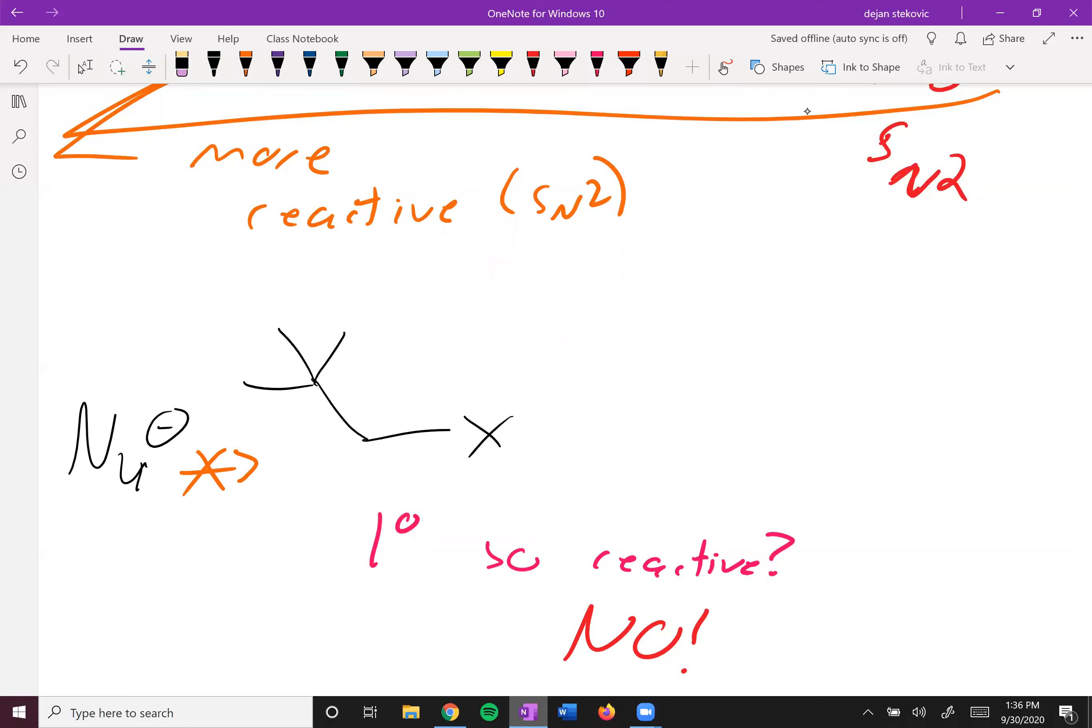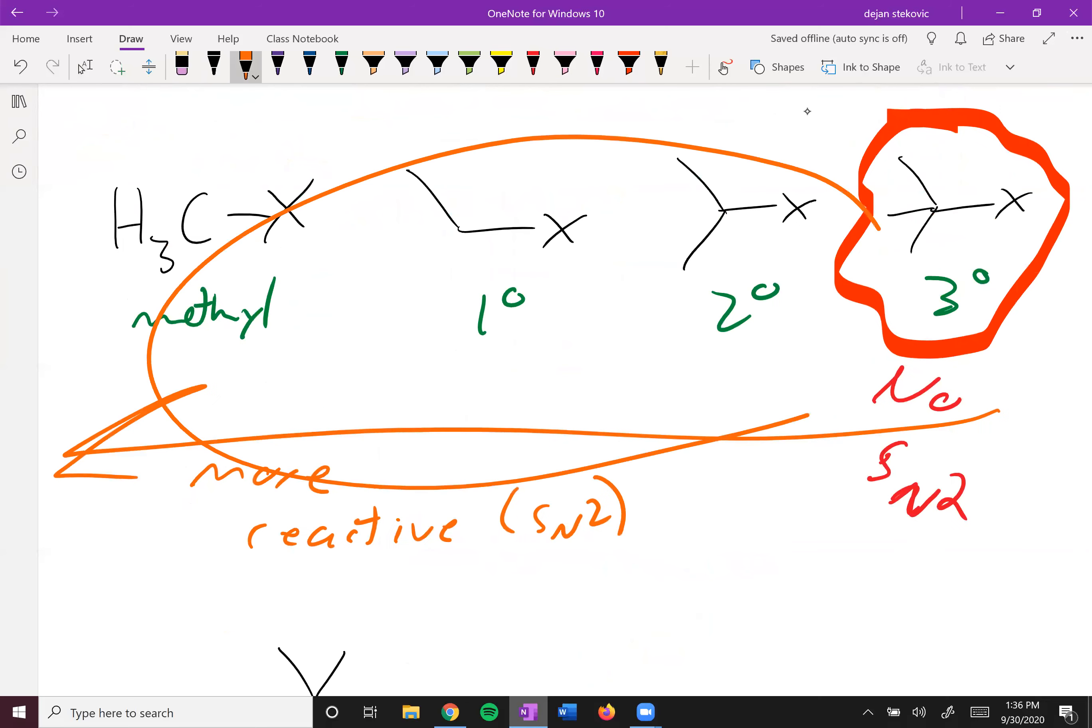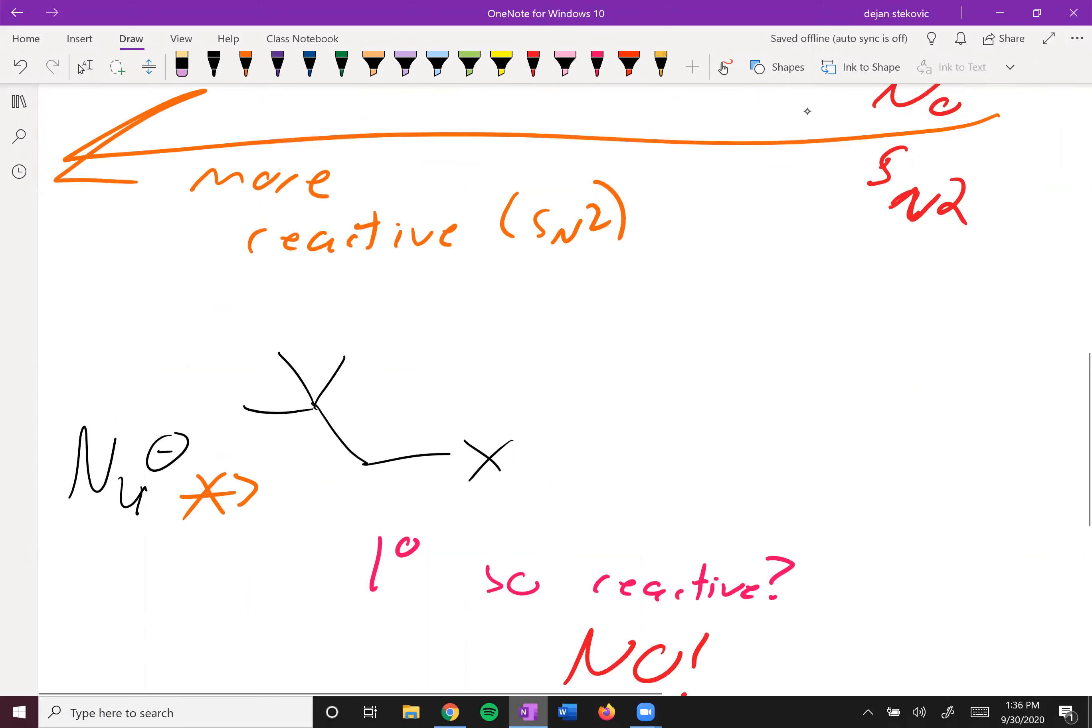Now you can ask, what if that tert-butyl was an isopropyl? And then you get into the results of, well yeah, it can happen. Maybe there's some other better things that can happen, depends on your conditions type of thing. But for now, I want you guys to know this chart up here and know that this specific example will not happen.